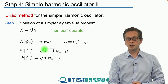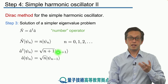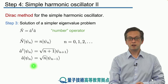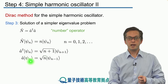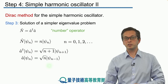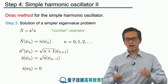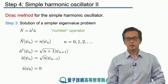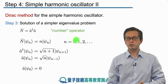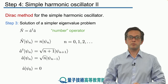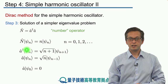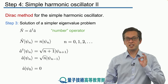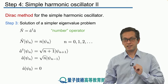What happens if we keep applying our annihilation operator and keep moving down the ladder of energies? We reach a state psi 0, and n goes from 0 to 1 to 2 and higher — there is no n equals minus 1. So our annihilation operator applied to the lowest energy eigenvector psi 0 gives us the number zero. In other words, it annihilates our state.